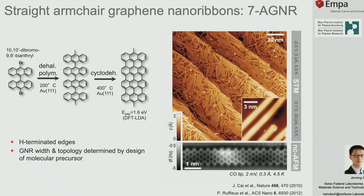The first successful example starts from a dibromo-bianthracene molecule to fabricate a seven-armchair nanoribbon, which in this community is the standard test system for both theory and reproducibility of experiments. From the simulation point of view, one of the most frequent tasks is comparing the scanning probe images from experiment—STM or non-contact AFM—with simulation. Even for very clear images, simulations are fundamental to understand the origin of features in STM.